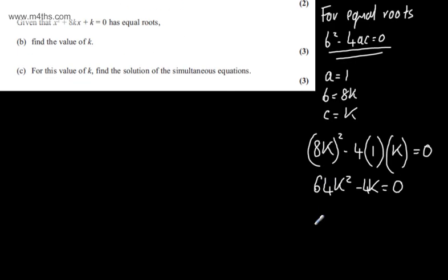We can factor out here 4k so if I take out a common factor of 4k that will leave me 16k minus 1 and we set this equal to 0. So from here we could see that k would be equal to 0 or we'd have now k equal to 1 over 16.